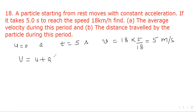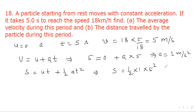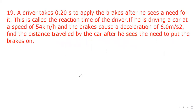Applying v = u + at: 5 = 0 + a × 5, giving a = 1 meter per second square. Distance s = ut + ½at² = 0 + ½ × 1 × 5² = 12.5 meter. Average velocity = s/t = 12.5/5 = 2.5 meter per second.